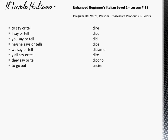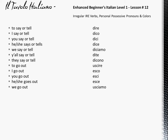To go out: Uscire. Uscire. I go out: Esco. Esco. You go out: Esci. Esci. He or she goes out: Esce. Esce. We go out: Usciamo. Usciamo. Y'all go out: Uscite. Uscite. They go out: Escono. Escono.